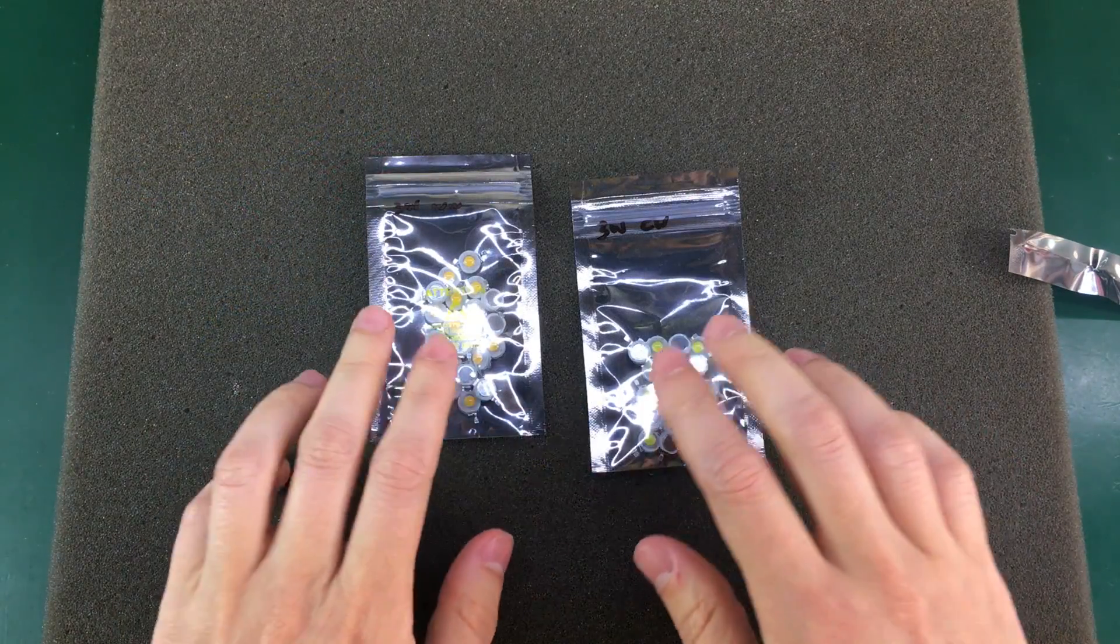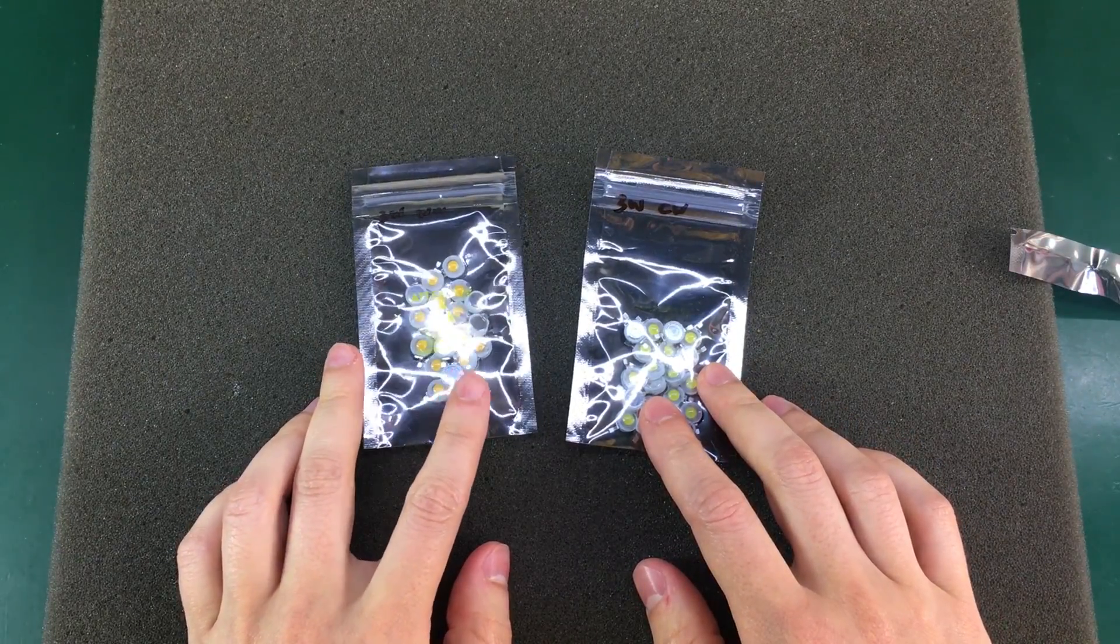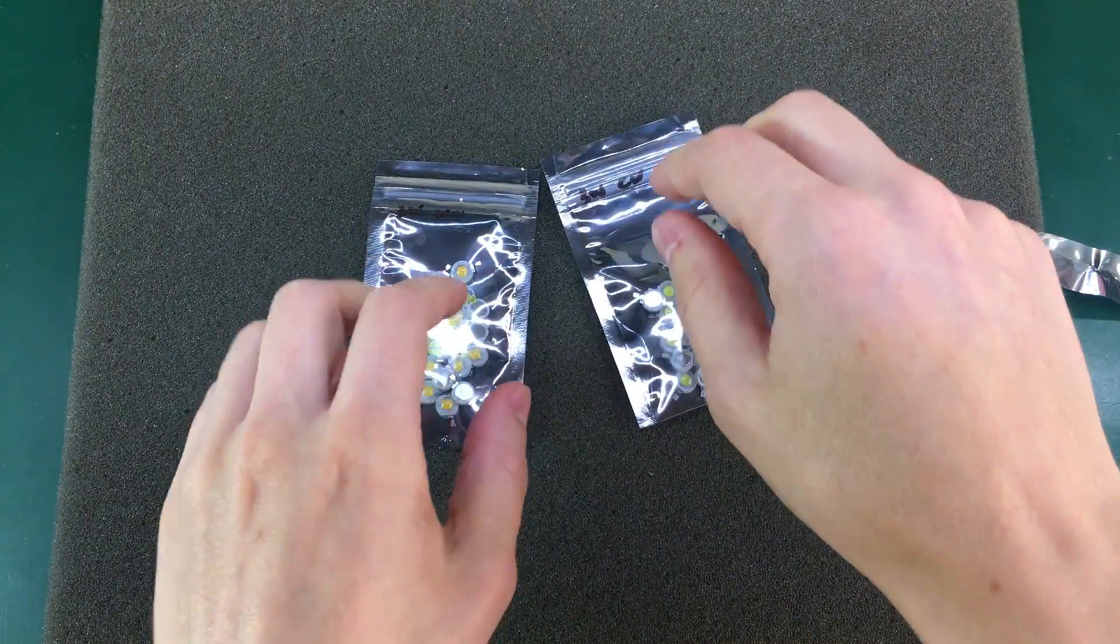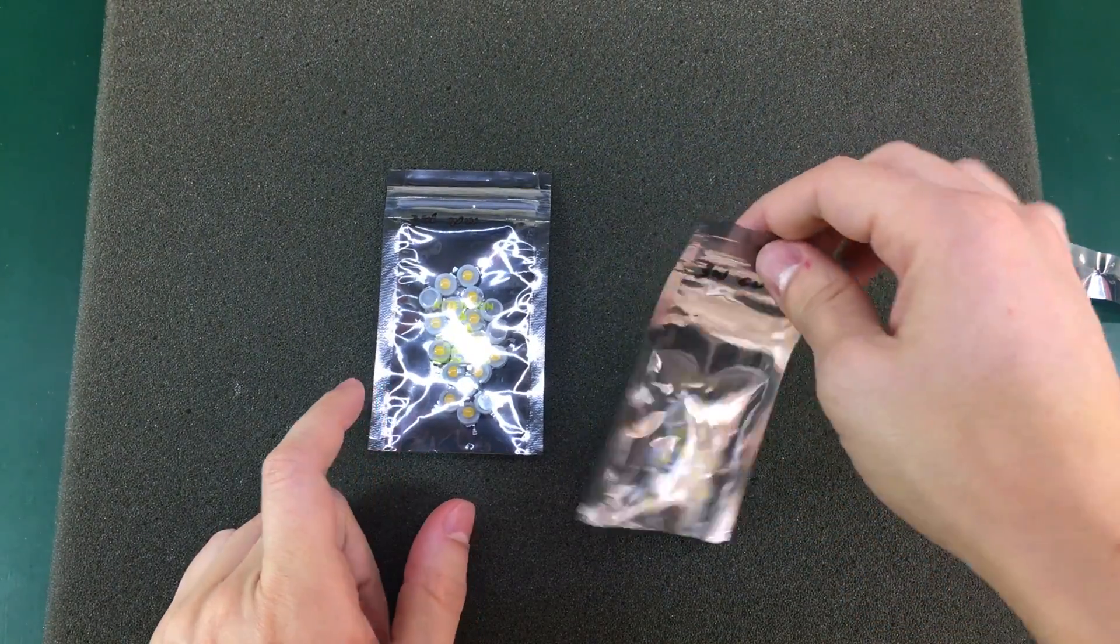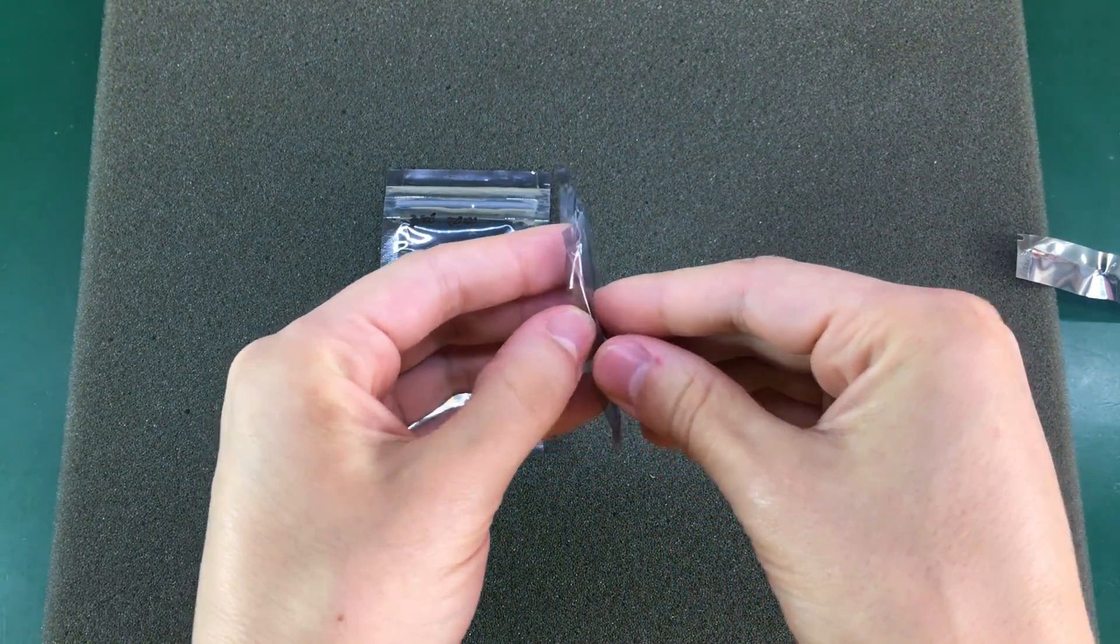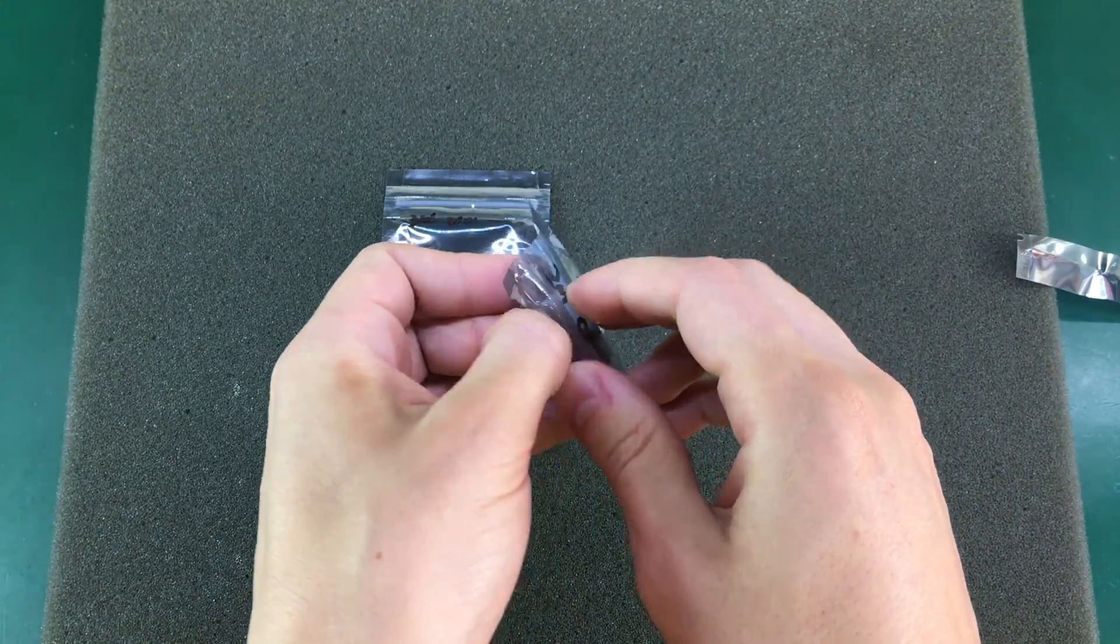Next I also got some of these 3 watt LEDs, because I wanted to experiment with them. I got both warm white and cold white, and these were supposed to come with a star shaped aluminum PCB, at least that's what I paid for.